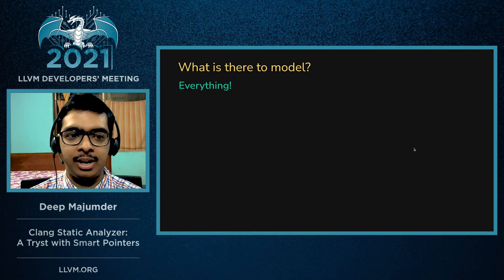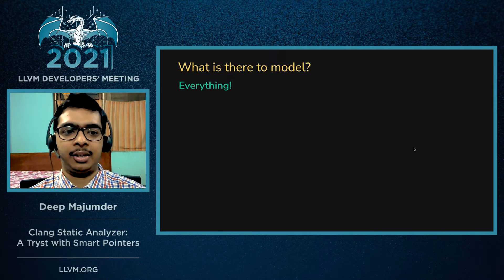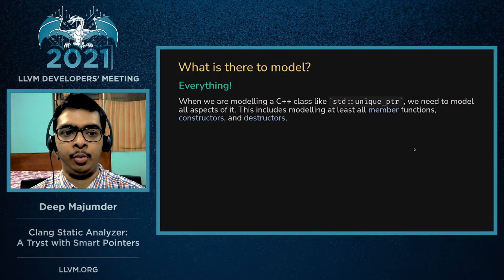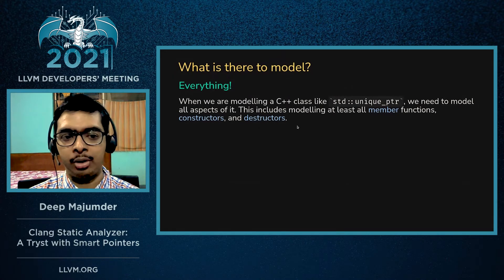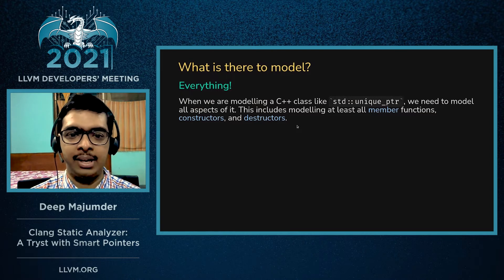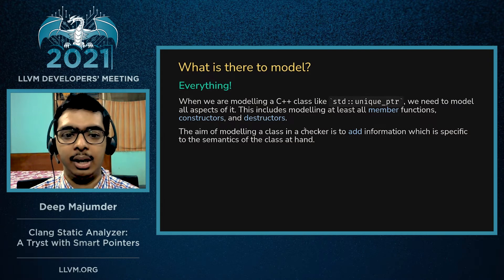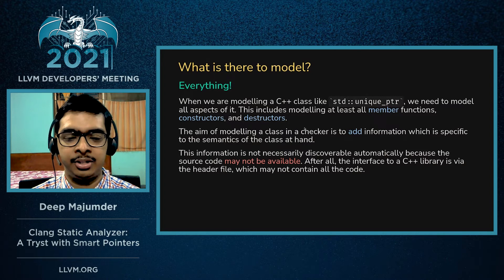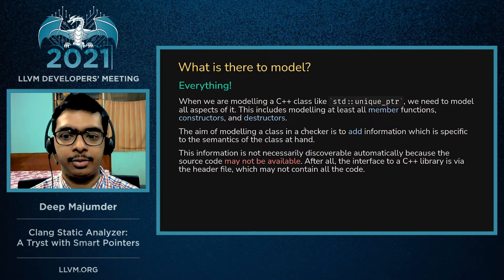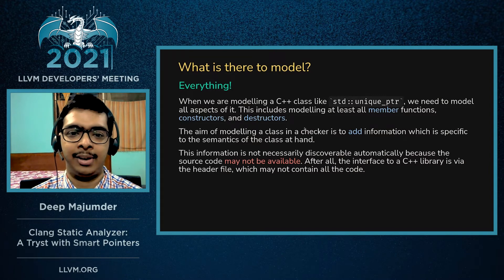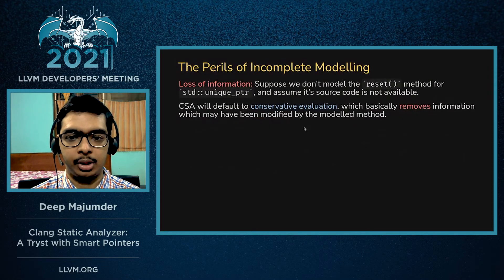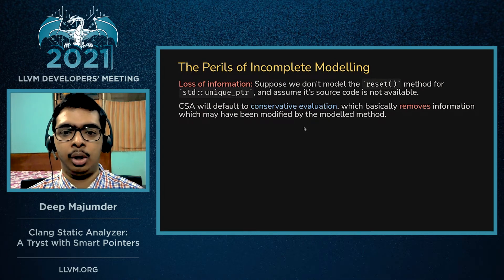Since we're only tracking nullity, what else is there to model? It turns out that for a complex class like std::unique_ptr we model everything — all member functions, all constructors, and all destructors — because all of these have specific behavior that is not obvious. By modeling these functions we add the correct semantics into the checker. This is not automatically discoverable because the source code may not be available; the interface to a C++ library is via its header file, which need not contain the full implementation, so we manually encode this information in the checker.